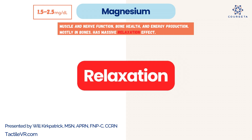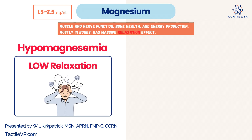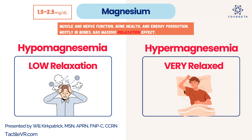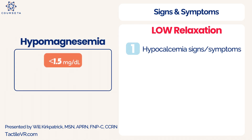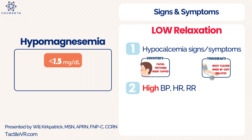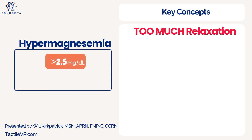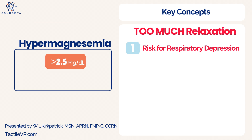Magnesium is very similar to calcium but has a major relaxation effect on the body. Hypomagnesemia is less than 1.5; hypermagnesemia is greater than 2.5. With hypomagnesemia, there's not enough relaxation — you'll see Chvostek's and Trousseau's signs, high blood pressure, high heart rate, high respiratory rate, and symptoms of anxiety. Seizure precautions are required for both hypocalcemia and hypomagnesemia. With hypermagnesemia, there's too much relaxation — the number one concern is respiratory depression, with respiratory rate and ventilation too low to maintain adequate oxygenation.